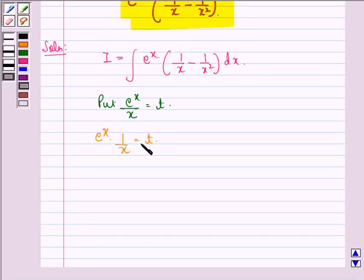Now we differentiate both sides with respect to x. So here we apply the product rule: the first function e^x into differentiation of second function is -1/x²